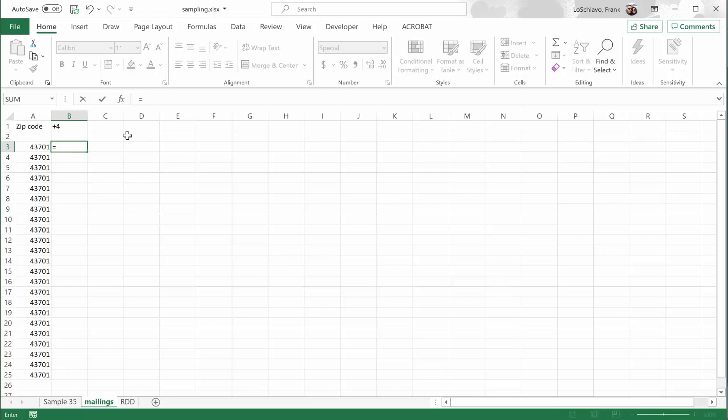We're going to begin with an equal sign and then type in that command name rand between. I'm going to open up my parentheses. Excel is asking me now for the lowest four digit number possible. I'll put in 0000, put a comma. What's the highest four digit number? I want it to select from 9999.